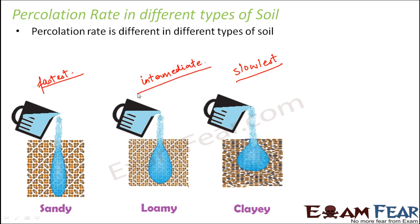Please do not get confused: sandy soil holds the minimum amount of water, yet it has the maximum percolation rate — these are two different things. As you can see in the picture, clayey soil holds more water within a given depth, while sandy soil allows water to pass through quickly but does not retain it. Clayey soil holds a large amount of water and doesn't allow it to go deep down — that's the difference between the two properties.